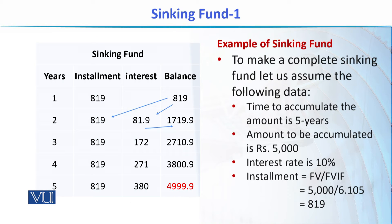Let's take another example and see how the sinking fund schedule looks. If we need to accumulate 5,000 rupees after 5 years at 10%, applying the same formula gives us the installment amount. In this case, the installment is 819 rupees. So every year we deposit 819 rupees and continue earning interest on the accumulated balance.